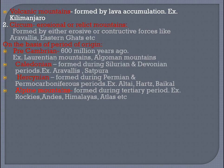On the basis of period of origin, mountains are classified into Precambrian, Caledonian, Harsinian, and Alpine mountains. Precambrian mountains are the oldest, formed about 600 million years ago — examples: Laurentian and Algoman mountains. Caledonian mountains were formed during the Silurian and Devonian periods and are also called mid-Paleozoic orogenic mountains — example: Aravallis and Satpura.